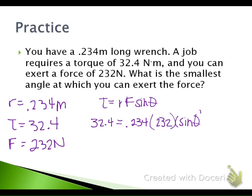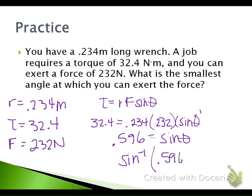We're solving for a number equal to sine theta, then finding theta itself. We get sine of theta equal to about 0.596 or 0.597. To get theta by itself, we use inverse sine: sine⁻¹(0.596). As long as the calculator is in degrees, we get theta equal to 36.6 degrees.